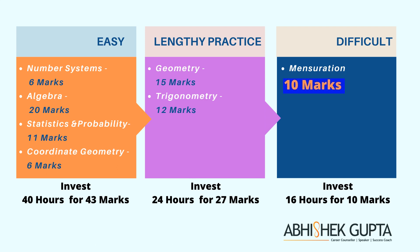Now let's go to the section which requires really lengthy practice. Geometry and trigonometry are two chapters where you really need to spend many more hours of practice. While the first four easy chapters required 40 hours, geometry and trigonometry alone will require 24 hours. But when you look at all six chapters together — the first four easy ones plus geometry and trigonometry — you will be able to complete 88% of your syllabus in just 64 hours.